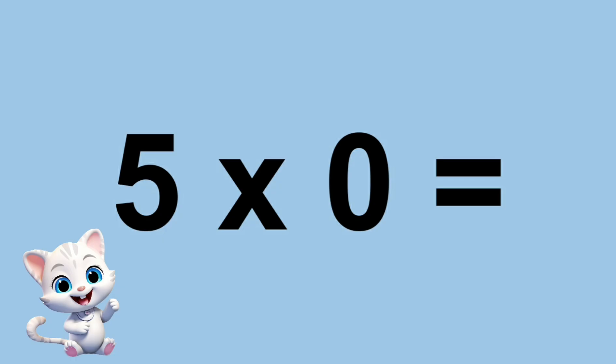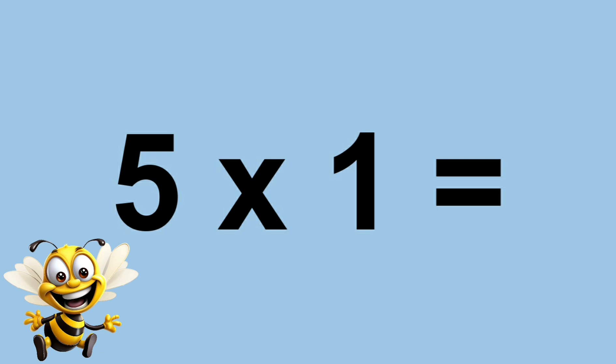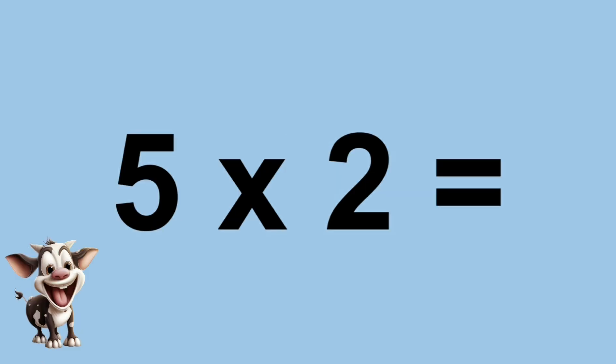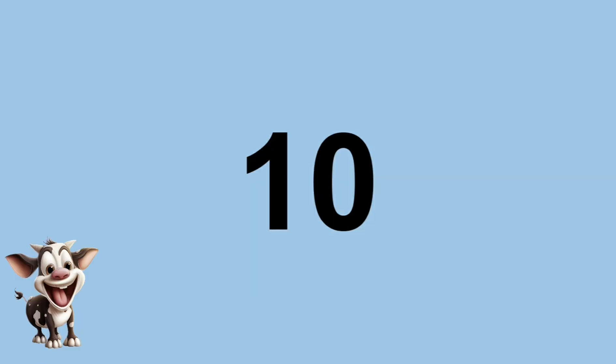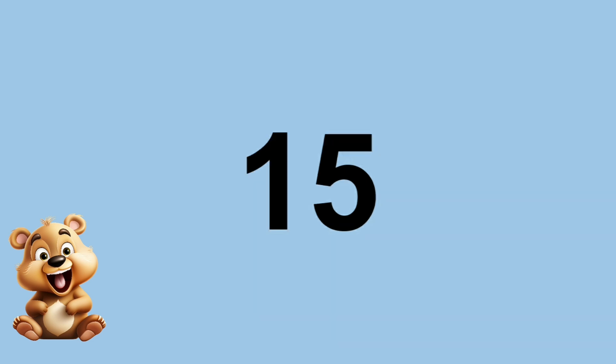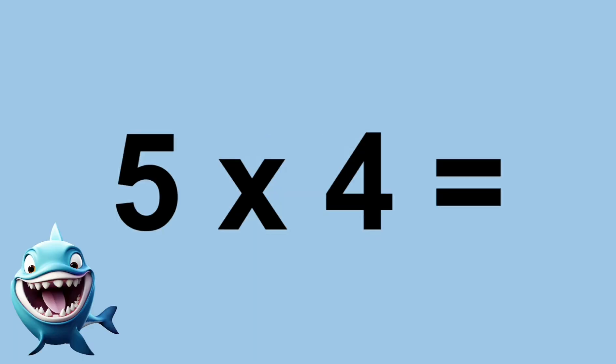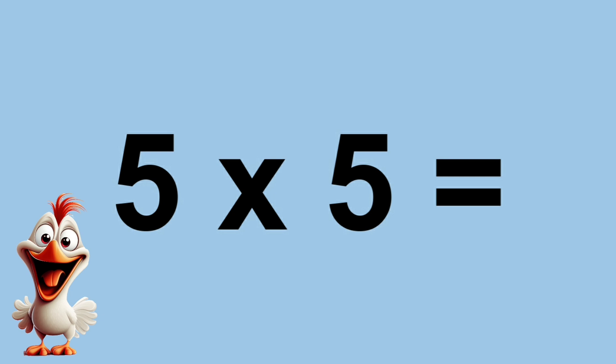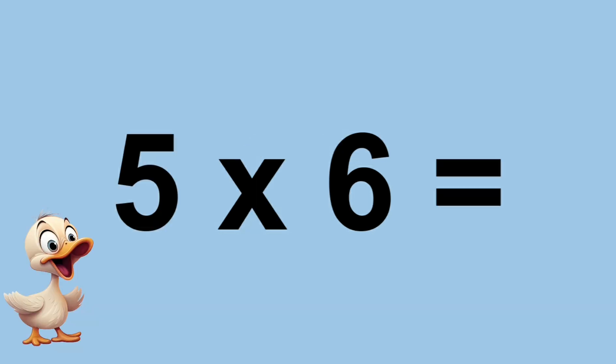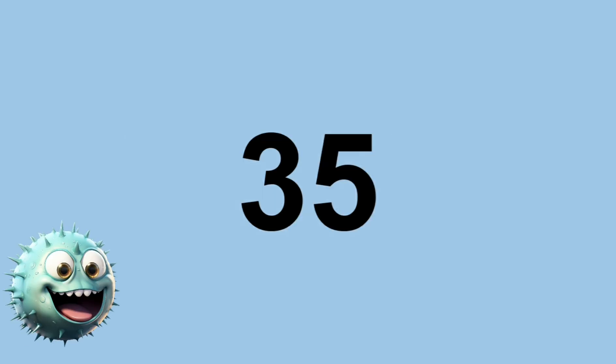5 times 0 equals 0. 5 times 1 equals 5. 5 times 2 equals 10. 5 times 3 equals 15. 5 times 4 equals 20. 5 times 5 equals 25. 5 times 6 equals 30. 5 times 7 equals 35.